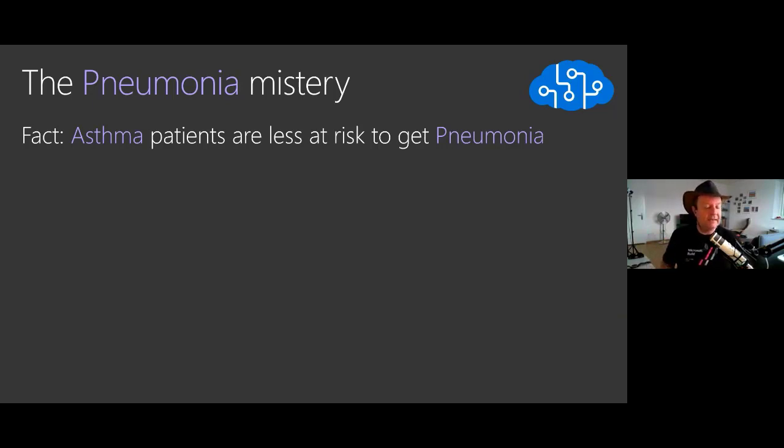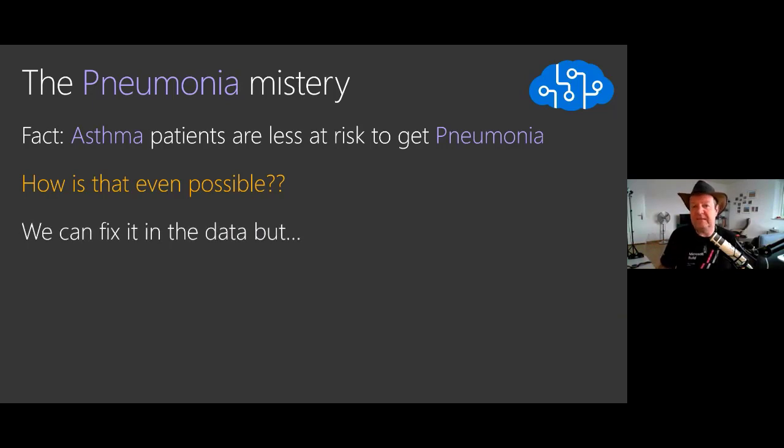But what was actually happening is that patients with asthma were more attentive to their own body and they were going to the doctor earlier when they were feeling bad. Then the doctor would test and say you might have early signs of pneumonia, let's treat that early, and then it didn't degenerate into pneumonia. So the data was correct, but there was this bias - the computer totally misunderstood the context of what was going on. Thankfully, a human doctor was able to find that out and say maybe we can fix it in the data by adding some risk factors for asthma patients.